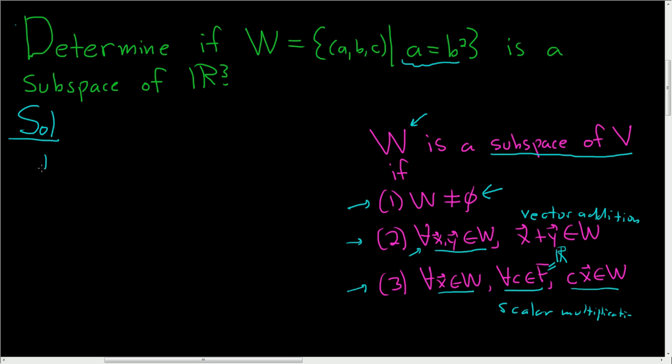Let's start with condition one. Is W non-empty? Well, the vector (0,0,0) is in W because 0 equals 0². Here this is our a, this is b, and this is c. To be in W means that a equals b². For the zero vector, 0 equals 0², which is true. So we can't use the first condition to show it's not a subspace.